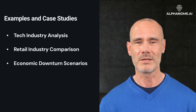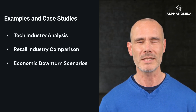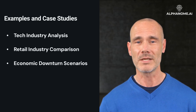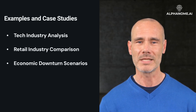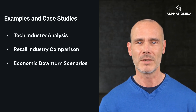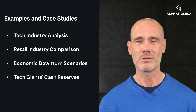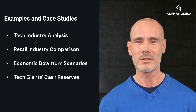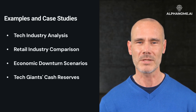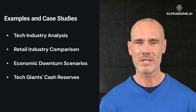Economic Downturn Scenarios: during an economic downturn, a company's debt-to-asset ratio might increase. Contextualizing this ratio by considering the overall economic climate can differentiate between systemic risk and poor management. Tech Giants Cash Reserves: examining the cash reserves of major tech companies in relation to their revenue and industry benchmarks can reveal insights about their strategic positions, R&D capabilities, and readiness for market shifts.